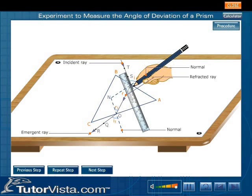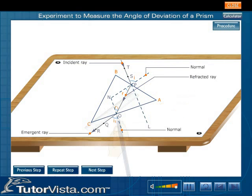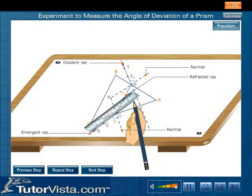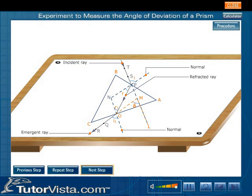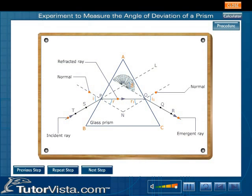If the incident ray TP is extended forward and the emergent ray RO backwards, they meet at M forming the angle OML. Measure the angle OML.